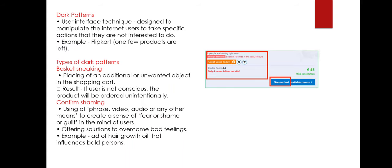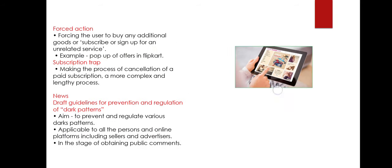The second type is confirm shaming. It is a dark pattern that uses a phrase, video, audio, or other means to create a sense of fear, shame, or guilt in the minds of users, and also offers a solution to overcome such feelings. For example, an ad for hair growth oil shows a bald person facing shame in public, then successfully regrowing hair after using the oil — making bald viewers likely to buy the product.